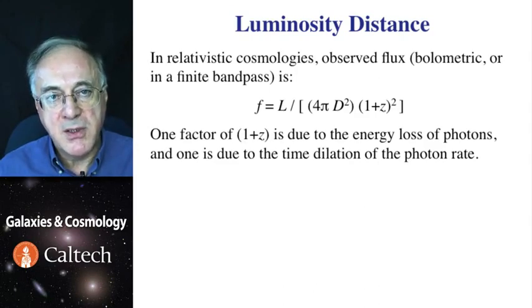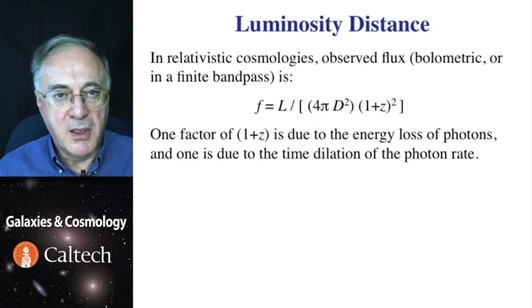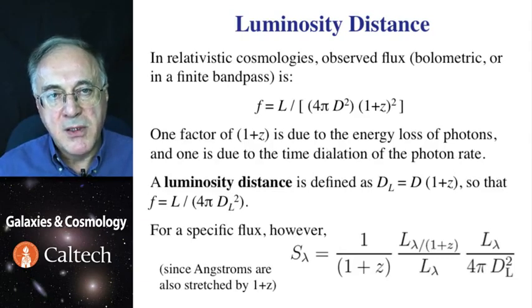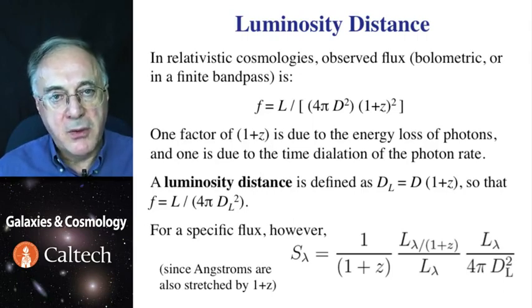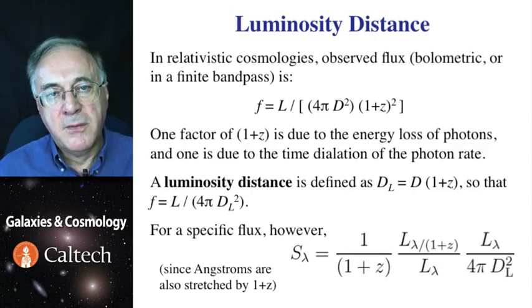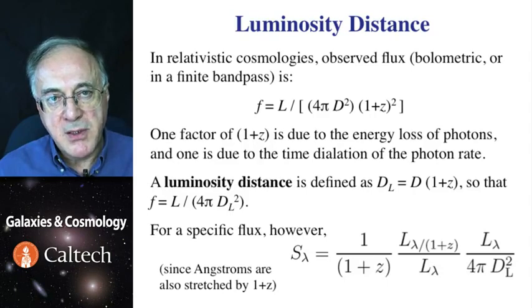So, for convenience, luminosity distance is defined as the actual radial distance times 1 plus z. So, when you take square of it, you recover the familiar inverse square formula. That is if we can measure the total luminosity, but we usually measure specific flux, which is power per unit wavelength or unit frequency. In that case, we recover 1 power of 1 plus z, because the angstroms are stretched by exactly the same factor, or the hertz are also stretched by one of that factor. So, in case of specific fluxes, there are no two powers of 1 plus z, only one.